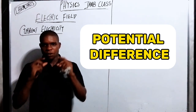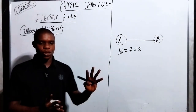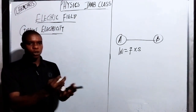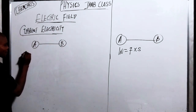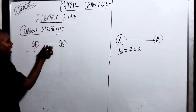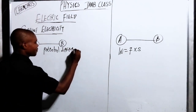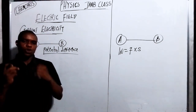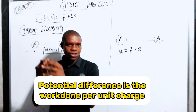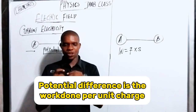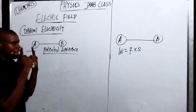That force which moves a charge from point A to point B is called potential difference. Just like the way water flows from a higher level to a lower level, you need a force or pressure to move charge from point A to point B. So potential difference is the work done per unit charge, and the unit is called volts, represented as V.